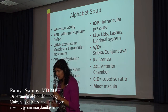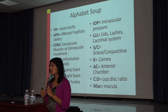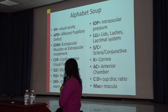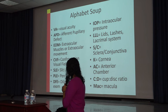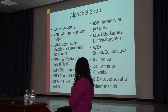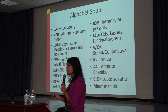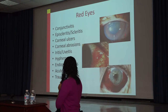Ophthalmologists speak their own language. If you've ever read an ophthalmology consult note, there's a lot of alphabet soup. Some abbreviations to know: LLL refers to lids, lashes, and lacrimal system; SNC is sclera and conjunctiva; K is cornea; AC is anterior chamber. These will be relevant as we discuss the common eye conditions.